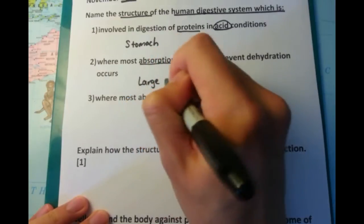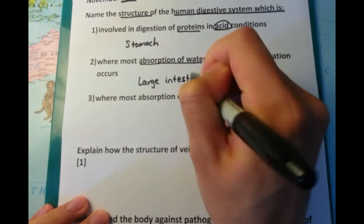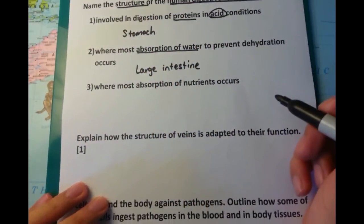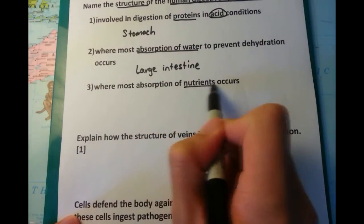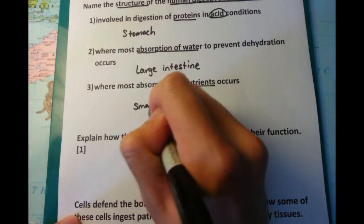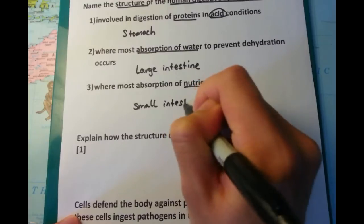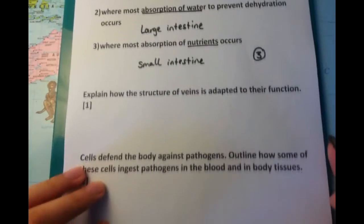Where does the most absorption of water to prevent dehydration occur? That's in the large intestine at the very end of the gastrointestinal tract. And the final one is where absorption of nutrients occurs, and that's the small intestine itself.